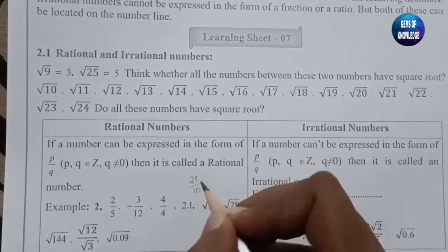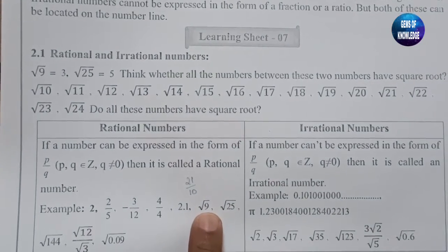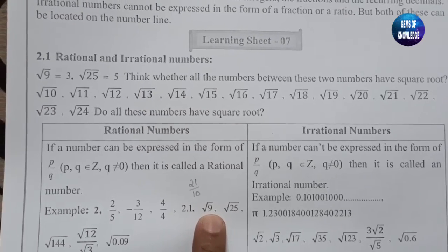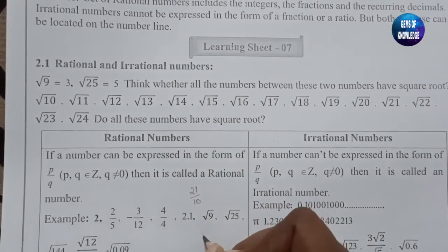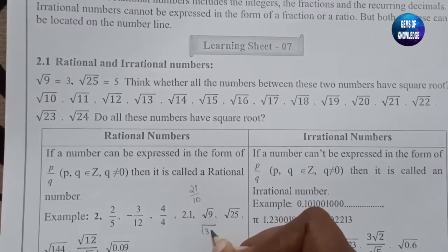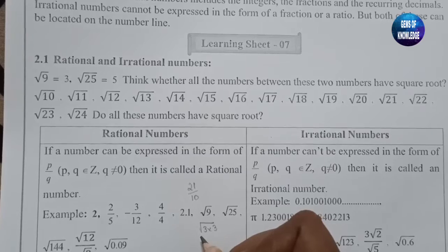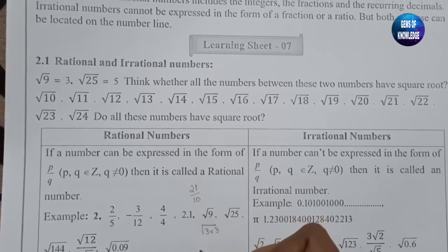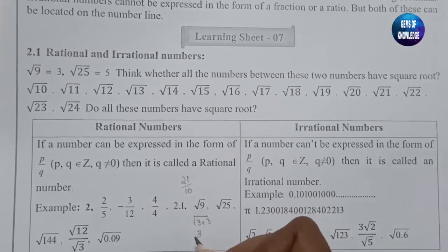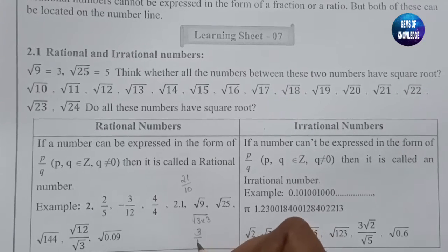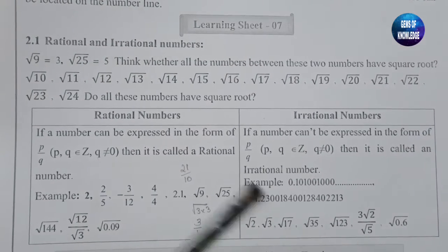Root 9 can be opened as 3 into 3, which is 3 squared. Removing the root gives us 3, and 3 can be written as 3 divided by 1, which is a rational number in the form of p by q.